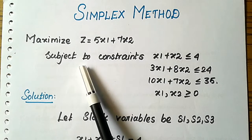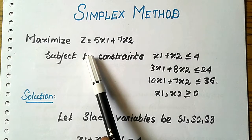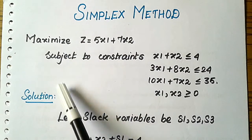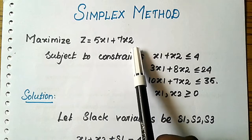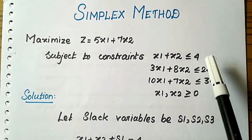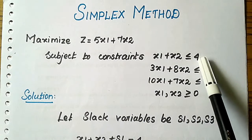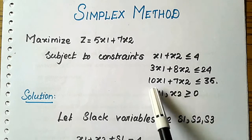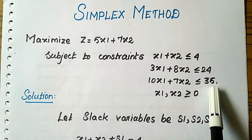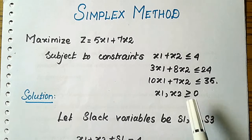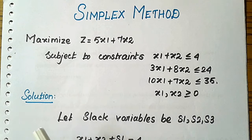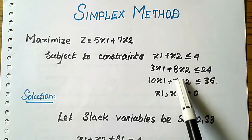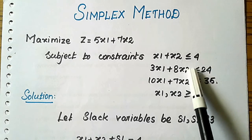Today we see the maximization case problem. The problem is: Maximize Z = 5x1 + 7x2, subject to constraints: x1 + x2 ≤ 4, 3x1 + 8x2 ≤ 24, 10x1 + 7x2 ≤ 35, and x1, x2 ≥ 0. Let's see the solution. First, you have to change the inequality constraints into equality constraints.